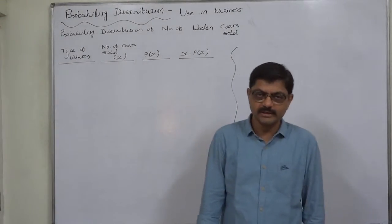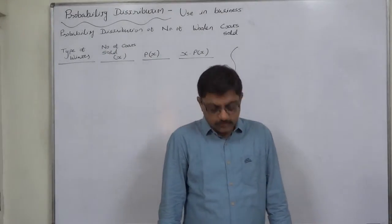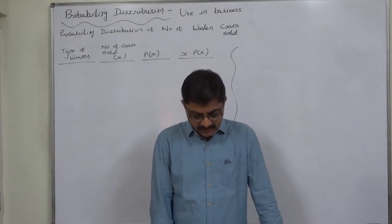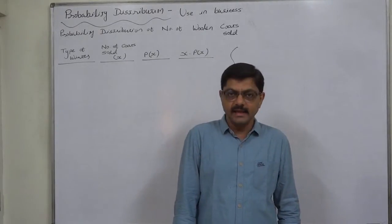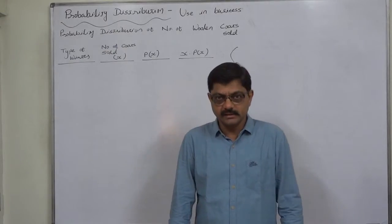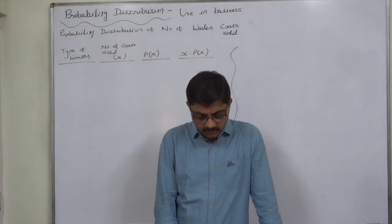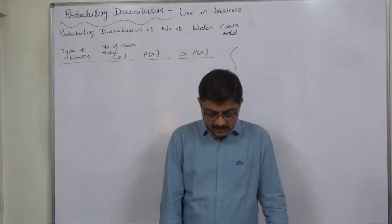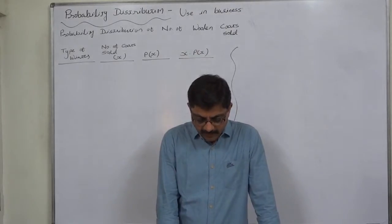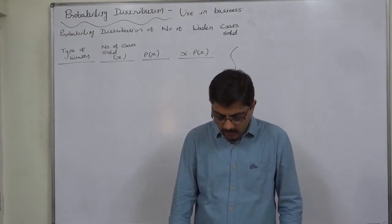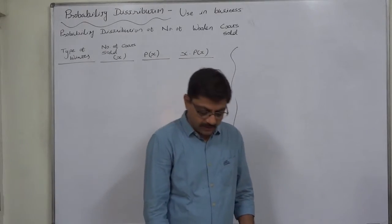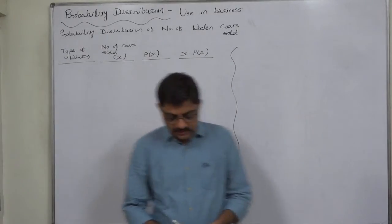Hello and welcome. In this new case of probability distribution, we are going to discuss the use of probability distribution for business. The case is a survey conducted over the last 25 years, which indicated that in 10 years the winter was mild, in 8 years it was cold, and in the remaining 7 years it was very cold. A company sells 1000 woolen coats in a mild year, 1300 in a cold year, and 2000 in a very cold year. We are required to find the yearly expected profit if a woolen coat costs rupees 173 and is sold to stores for rupees 248.